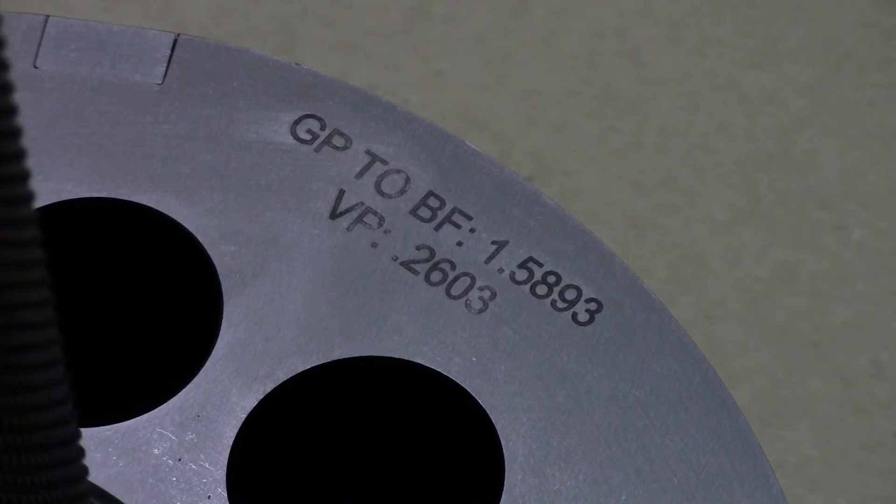API specification 5B gives a tolerance of plus or minus one turn or plus or minus 0.125 inches from the nominal value.